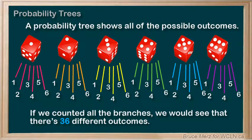For example, if we counted all the branches, we'd find that there are 36 different possibilities, which is what we'd expect.